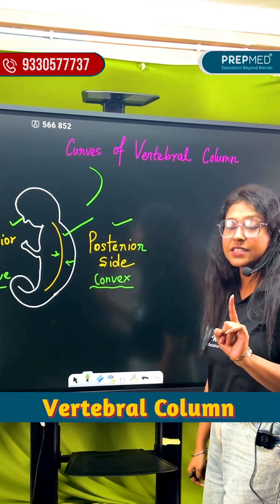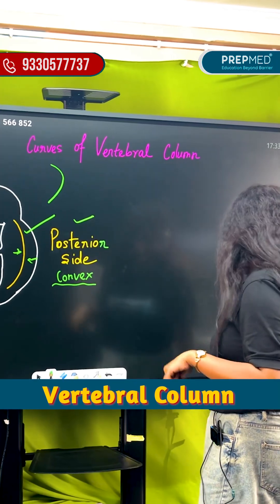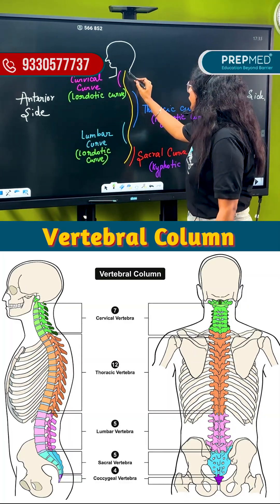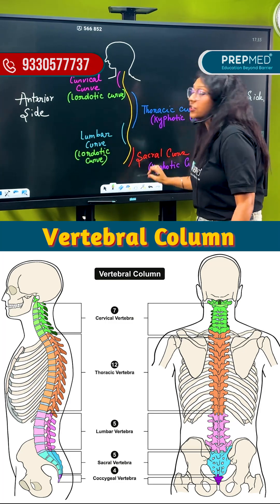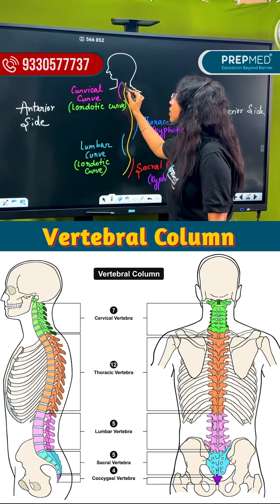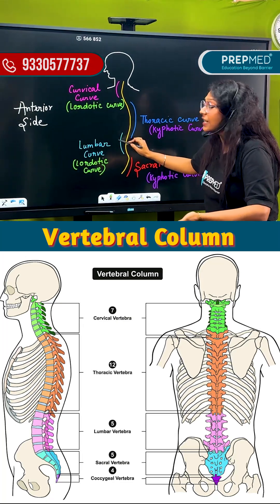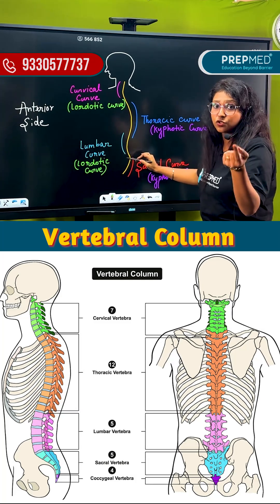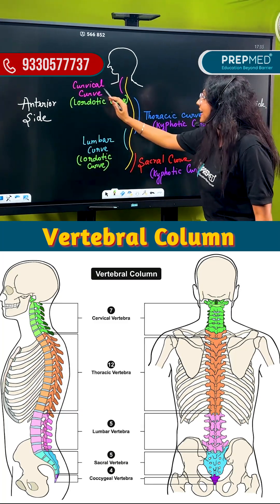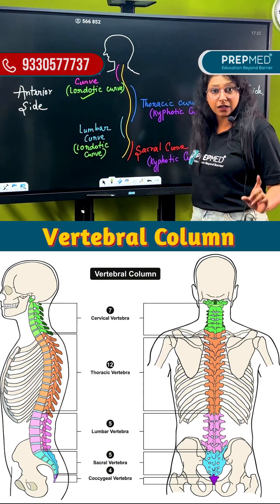But when it's the adult stage, you can see the change on the anterior side. In case of adults, looking at the cervical part, it is anteriorly convex. Whereas in case of thoracic, it is anteriorly concave. In case of sacral, it remains as in the fetal condition. This anteriorly convex part is called the lordotic curve.